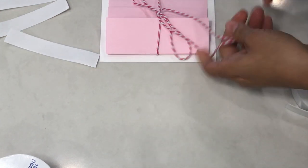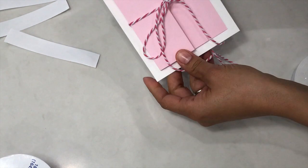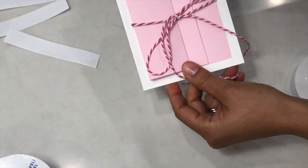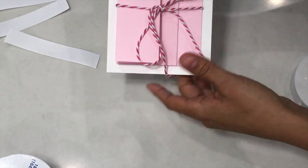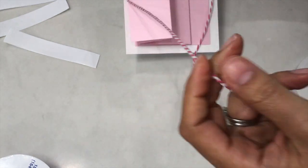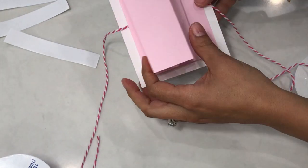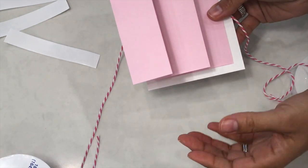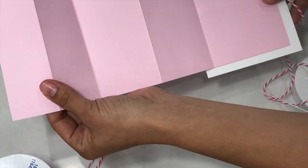Then all you have to do is tie it like this. Obviously, you would trim your twine, but this is what the card would look like. That is how you create this accordion-style folding card. It's very simple.